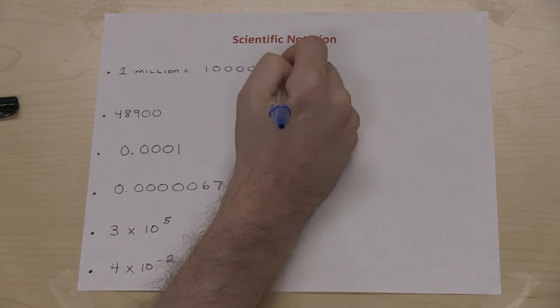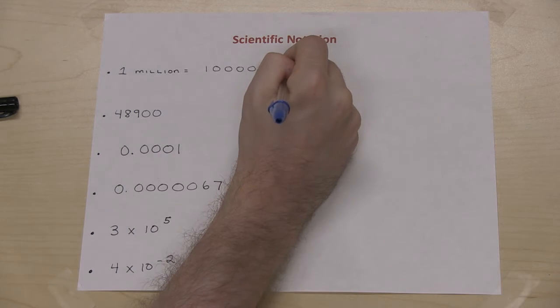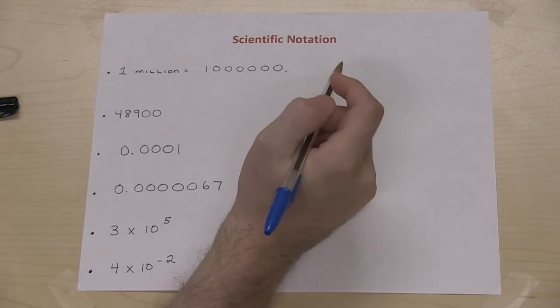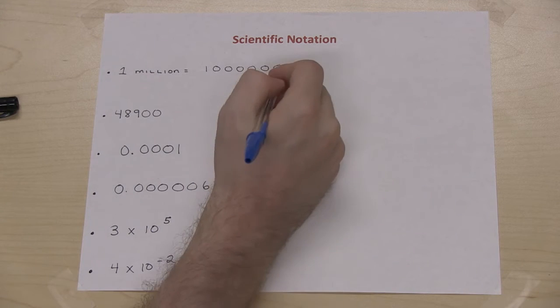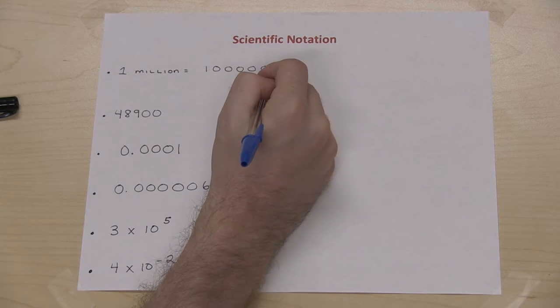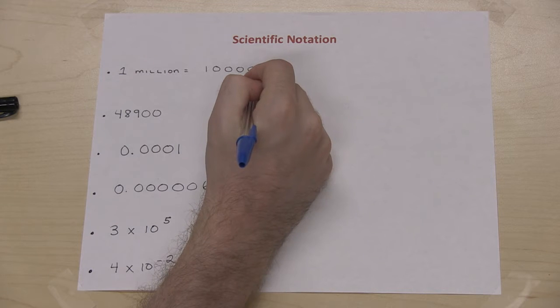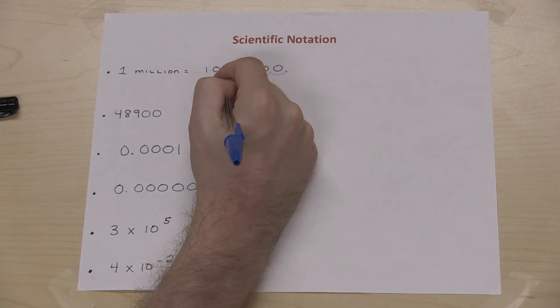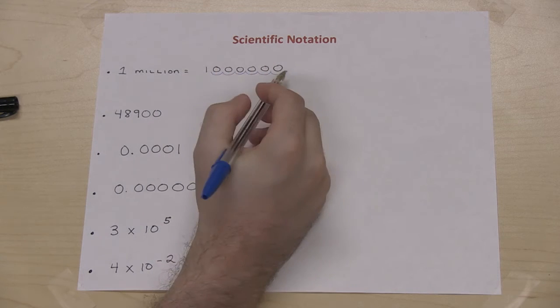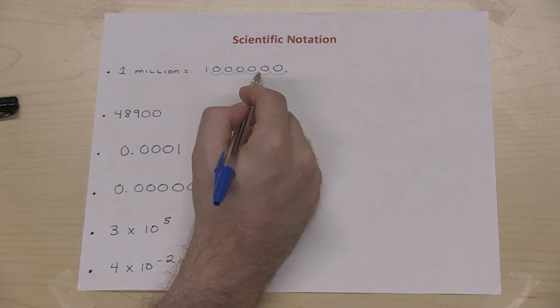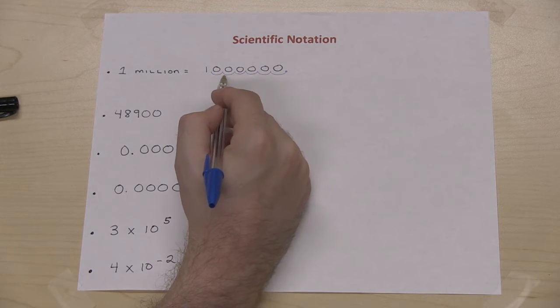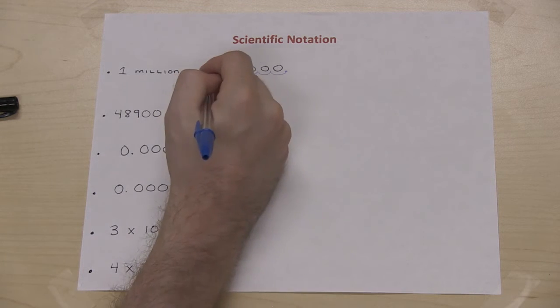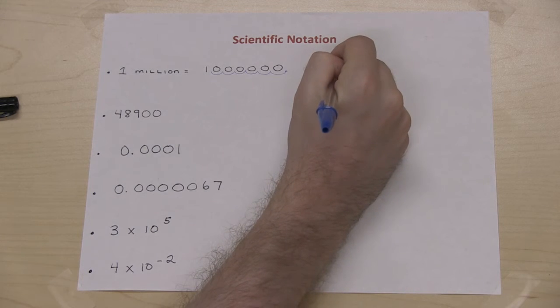The decimal point is always at the end of the number when it is not normally written. I take my decimal point and I begin to move it until I get to a number that is between 1 and 9. So when I move the decimal point 6 places to the left, I now have 1.0.